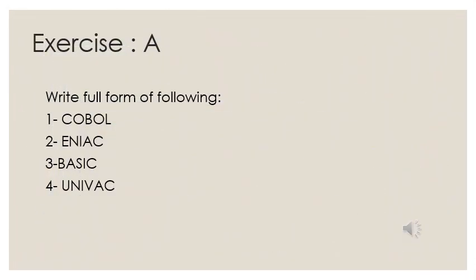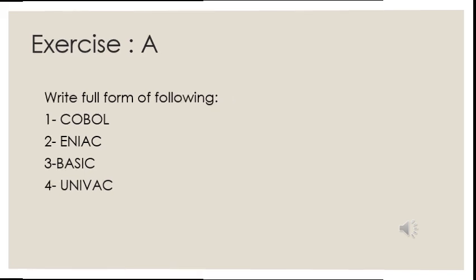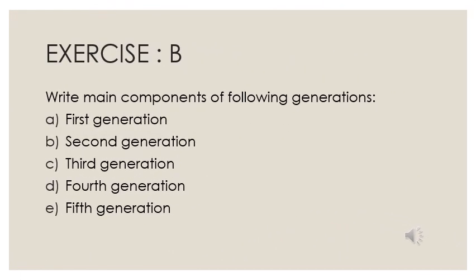Based on the topics discussed in this video, here are a few exercises for you. Please write these exercises in your notebook and learn them. Exercise A: Write the full form of the following — 1) COBOL, 2) ENIAC, 3) BASIC, 4) UNIVAC. Exercise B: Write the main components of the following generations — 1st, 2nd, 3rd, 4th, and 5th generation.